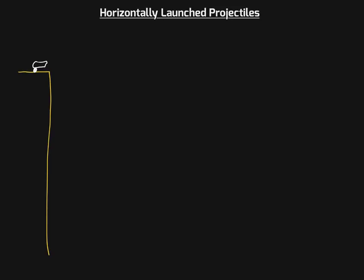To start out, within that lab, you were working with horizontally launched projectiles and you were seeing these projectiles make a nice parabolic shape. Now, why does that parabolic shape actually occur? The big key reason is that within 2D motion — within projectile motion — our horizontal motion and the vertical motion of a particular object are split into two parts.